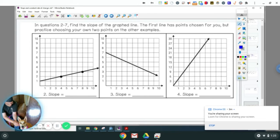So I'm going to rise to my dot, so I rose one, and I stop here because I'm in line with my next dot. I'm going to go one, two, three, four. So I ran four, so it would be one-fourth.